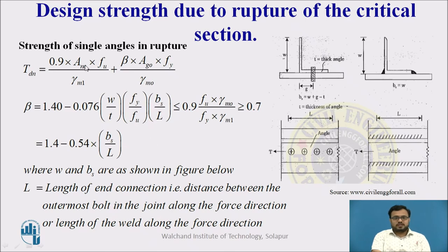ANC is the area of connected leg. Ag0 is the area of outstanding leg. Fy is the yield strength. Fu is the ultimate strength. These are the partial safety factors. And beta is the correction factor, beta is equal to this formula. W is given in this figure. T, thickness of member Fy, Fu, Bs, L. This value should be less than or equal to this one, and this value should be greater than or equal to 0.7.